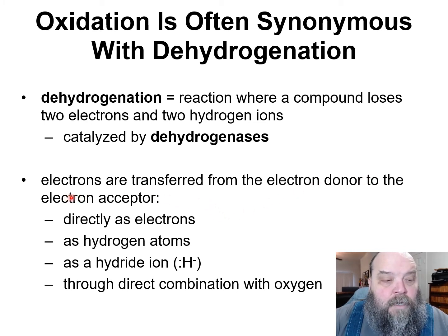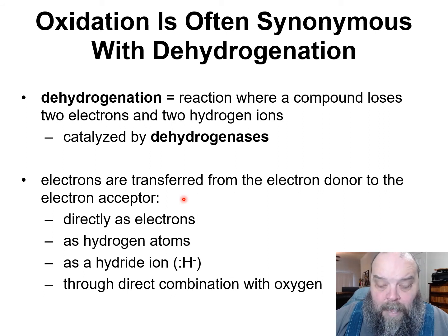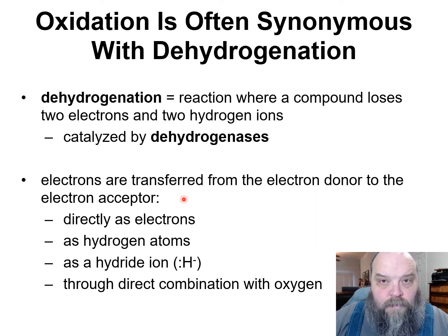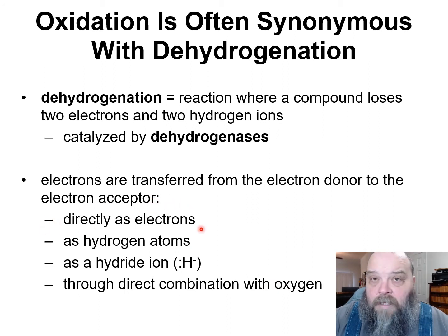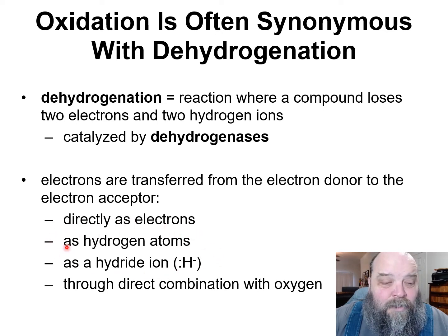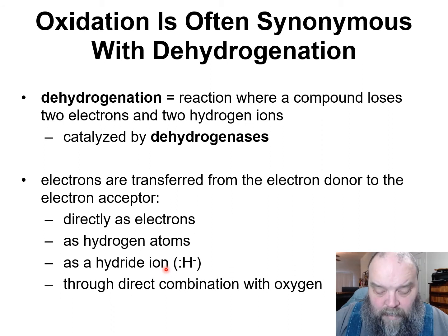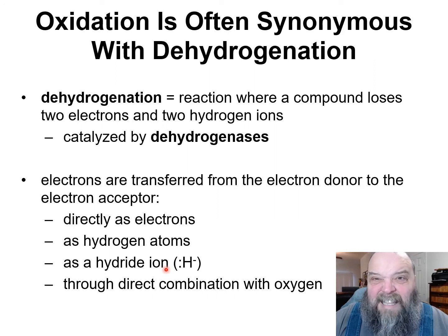So the electrons — those excited electrons being taken from A, who's just been oxidized, and then transferred somewhere else — a lot of times that electron will just be a bare electron, or it's going to be a hydrogen or a hydride ion being carried along. Again, an electron just with a proton somewhere around it. That's all we're talking here.